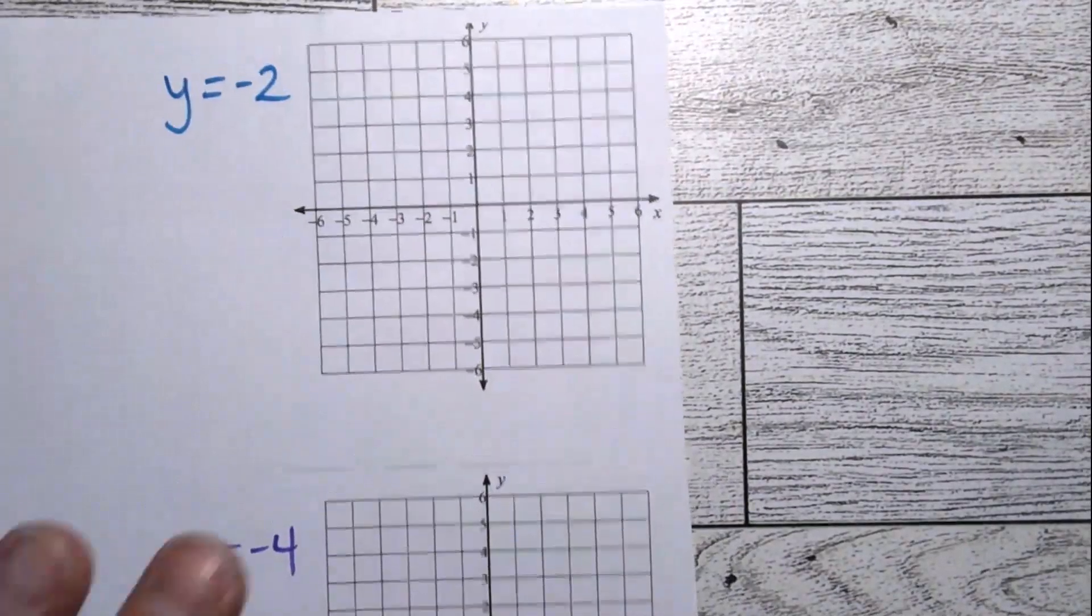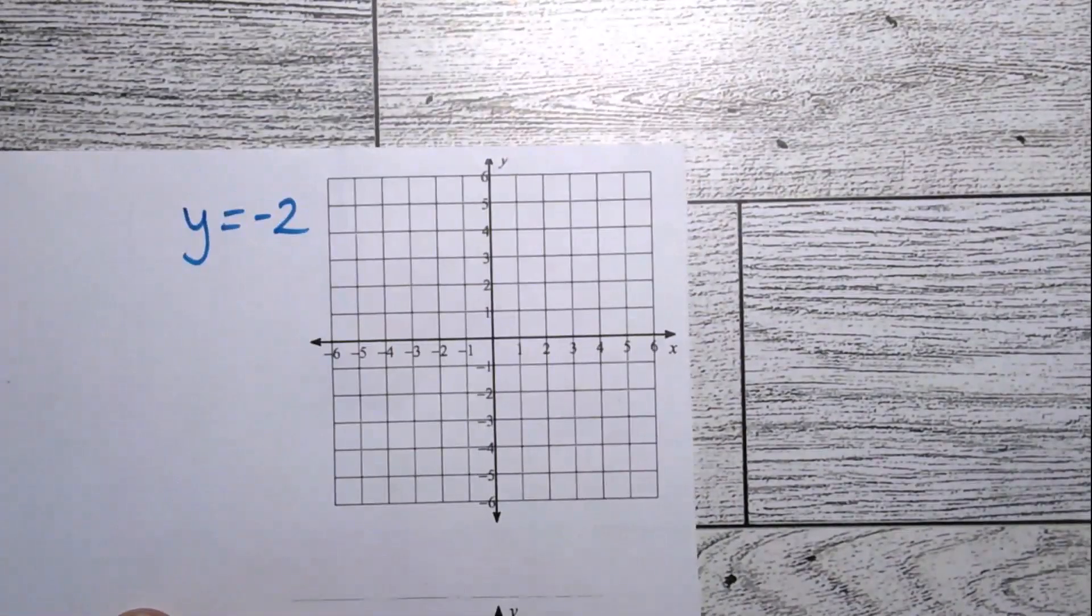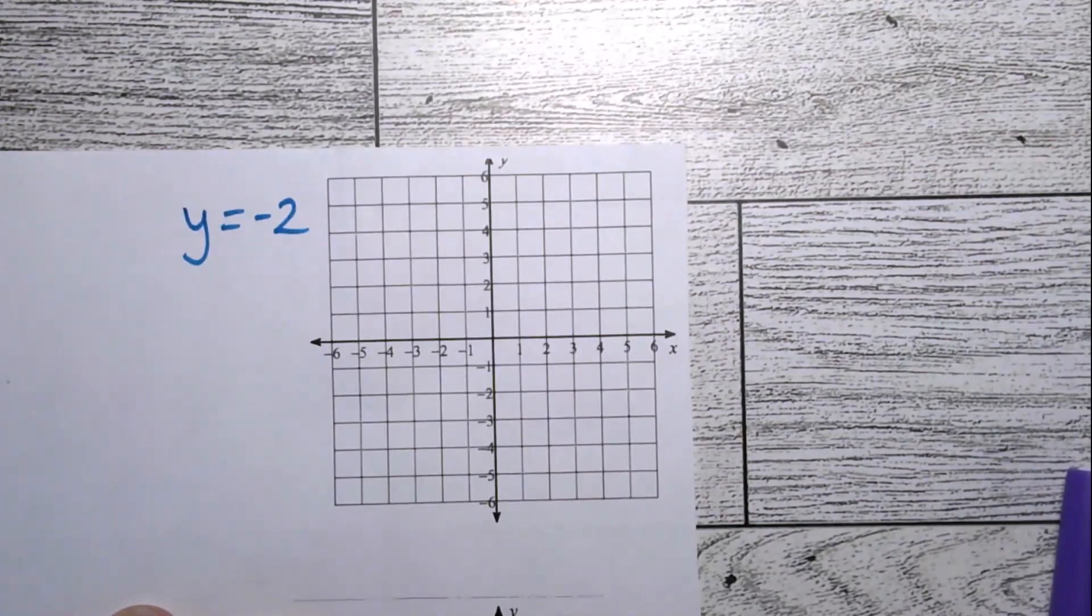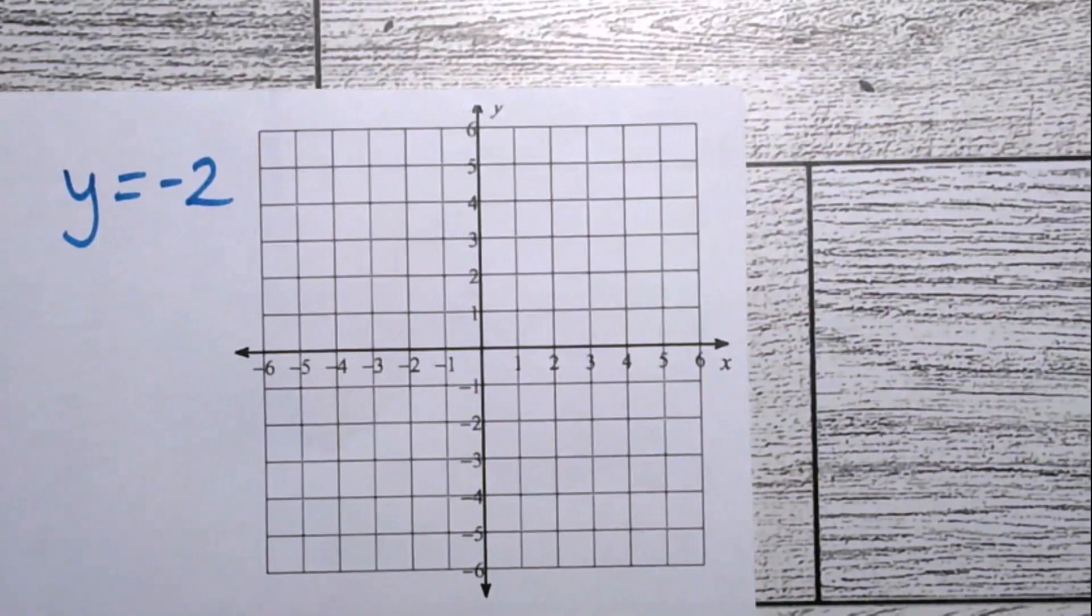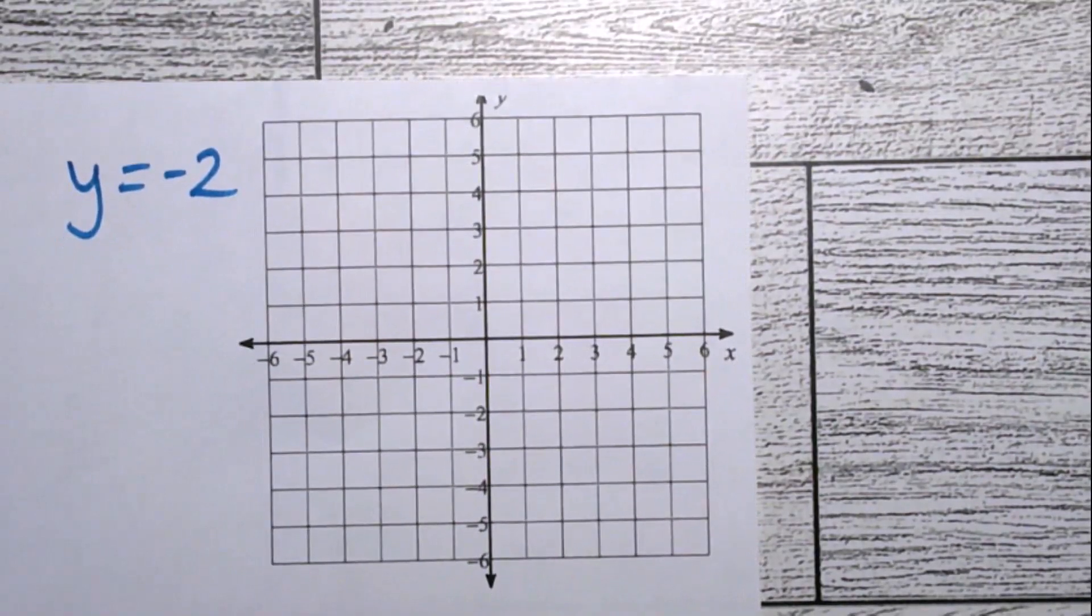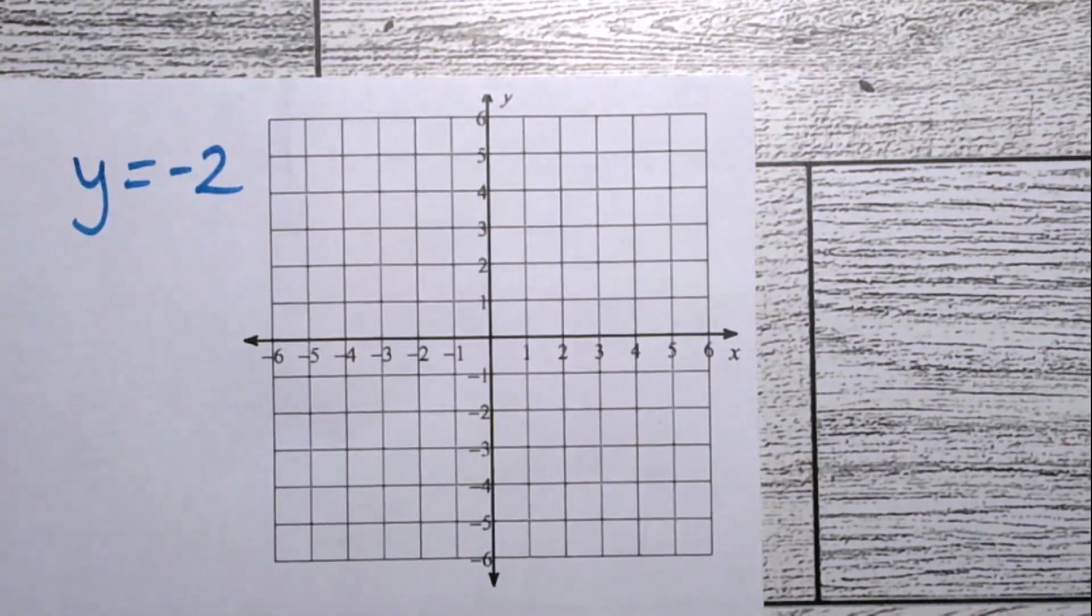So I will start here. y equals negative 2. Let me zoom in on this a little bit. And these handouts are in the classroom if you are in my class. These are part of our class notes.